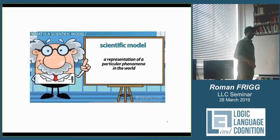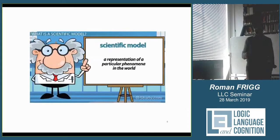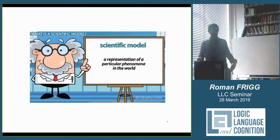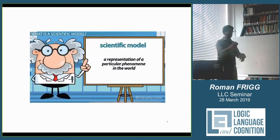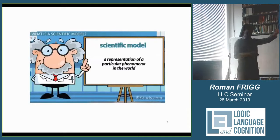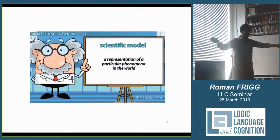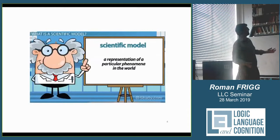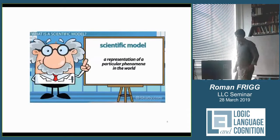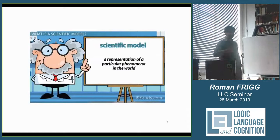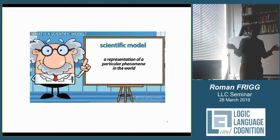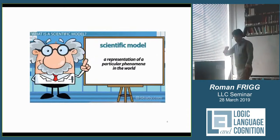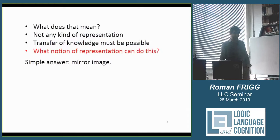When I prepared this talk, I took to the place where knowledge resides these days — the Internet. I Googled 'what is a model,' and the first eight out of ten pages said a model is a representation of something else. I found this nice graph: a model is a representation of a particular phenomenon in the world. That seems, with some qualifications to come later, to be at least a first-order approximation of the right thing to say.